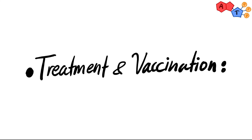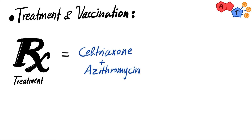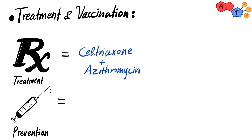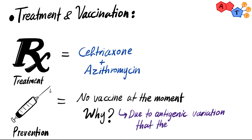For treatment, we usually use ceftriaxone and azithromycin. Ceftriaxone is a third-generation cephalosporin and azithromycin is a macrolide. For prevention, we sadly don't have a vaccine for this species yet — this is because of the antigenic variation that the pili display, making it difficult to develop a stable vaccine target.